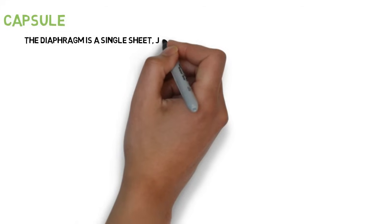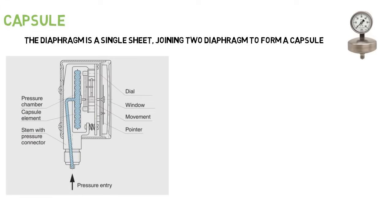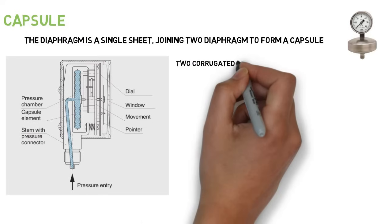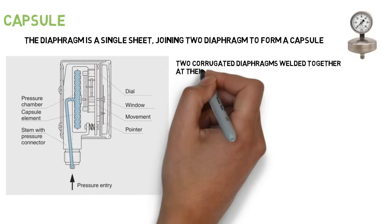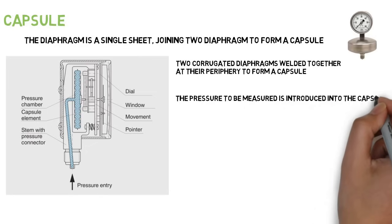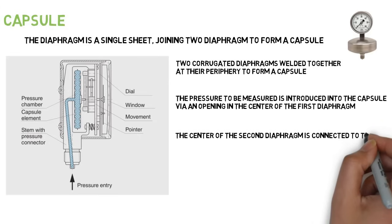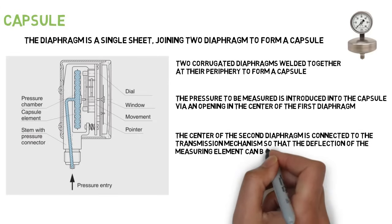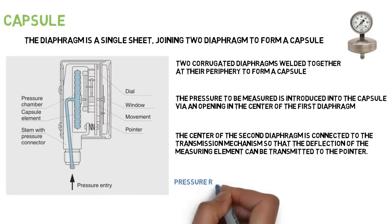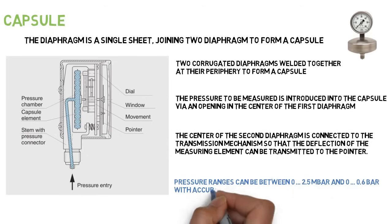Capsule. The diaphragm is a single sheet; joining two diaphragms forms a capsule. The sensing element of a capsule pressure gauge consists of two corrugated diaphragms welded together at their periphery. The pressure to be measured is introduced into the capsule via an opening in the center of the first diaphragm. The center of the second diaphragm is connected to the transmission mechanism so that the deflection can be transmitted to the pointer. Pressure ranges can be between 0 to 2.5 millibar and 0 to 0.6 bar, with accuracy classes of 0.1 to 2.5.